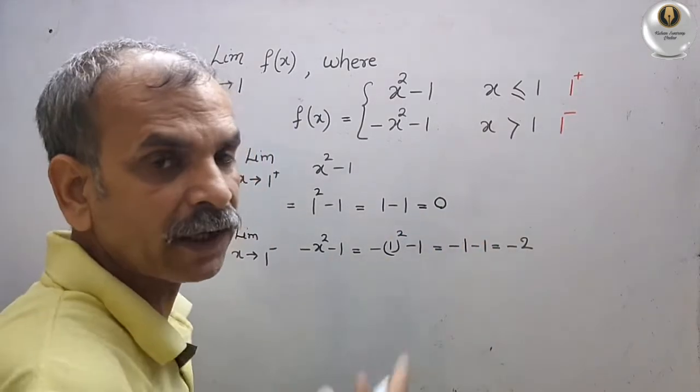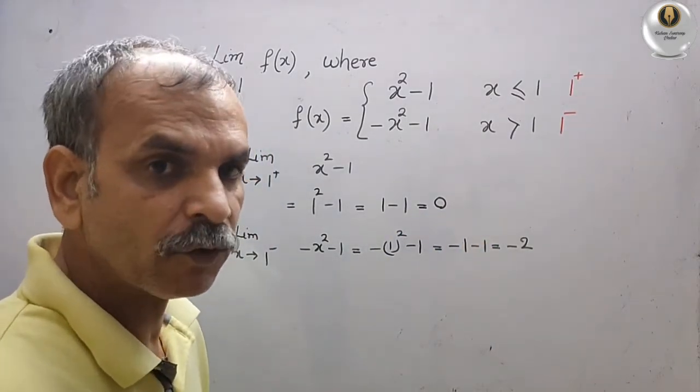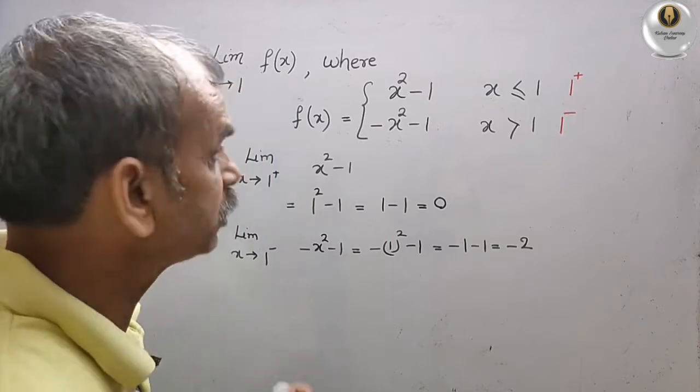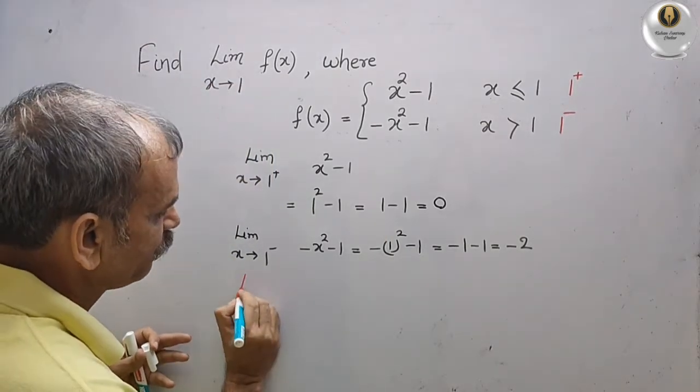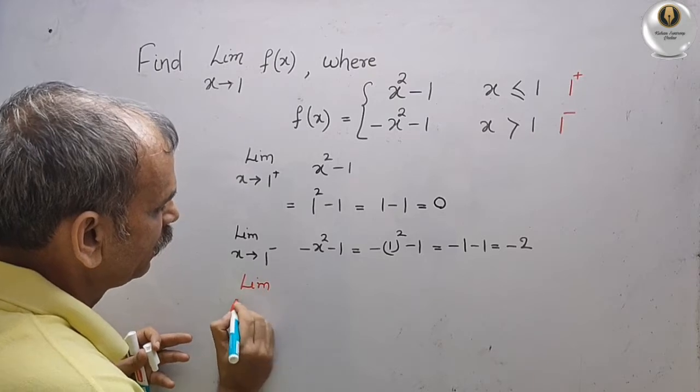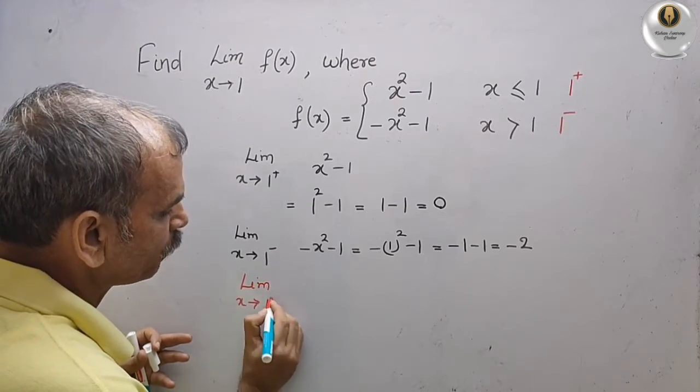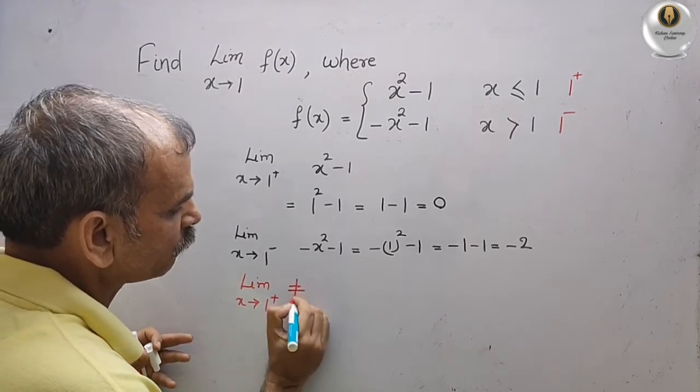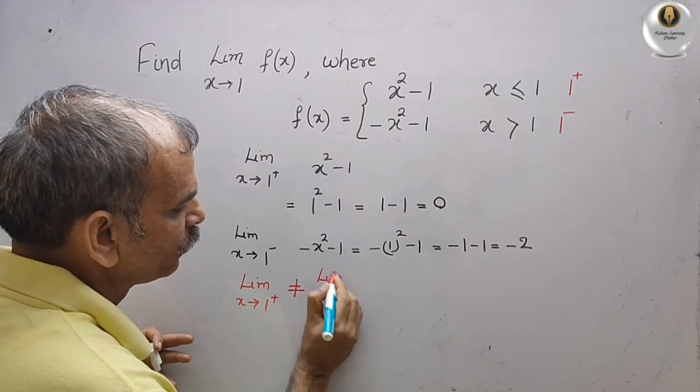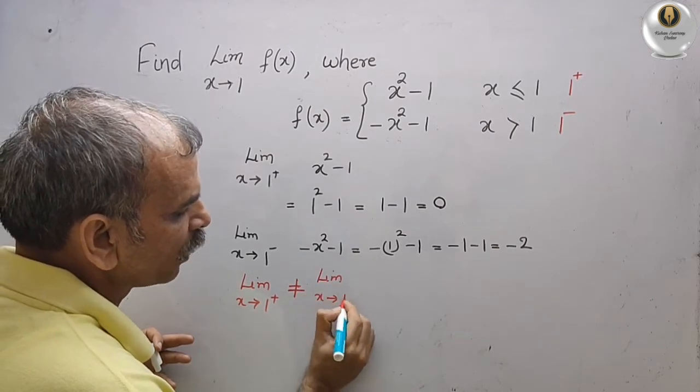Now you can see both the values are different. Therefore, we will write what is our conclusion: our conclusion is that limit x tends to 1 plus is not equal to limit x tends to 1 minus.